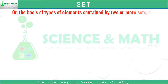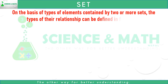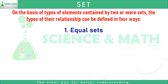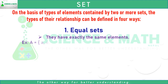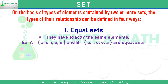On the basis of types of elements contained by two or more sets, the type of relationship can be defined in four ways. Number one: equal sets. Equal sets have exactly the same elements. For example, A equals the set of A, E, I, O, U and B equals the set of U, I, O, E, A.